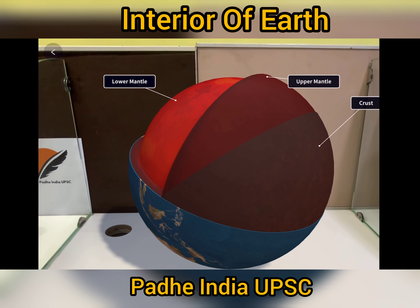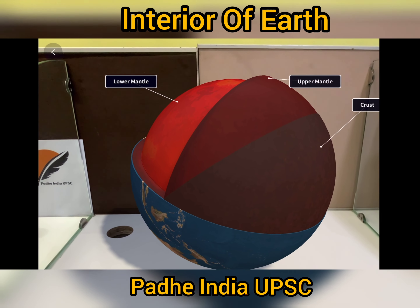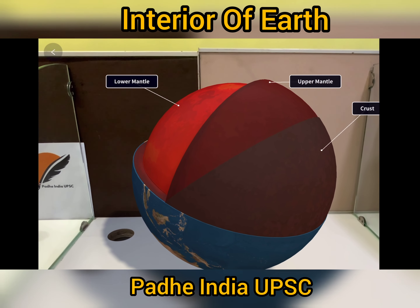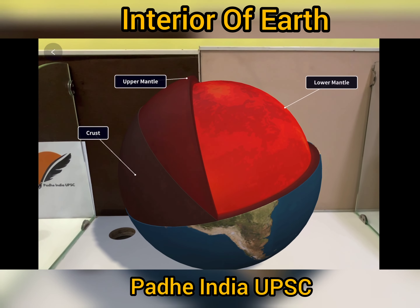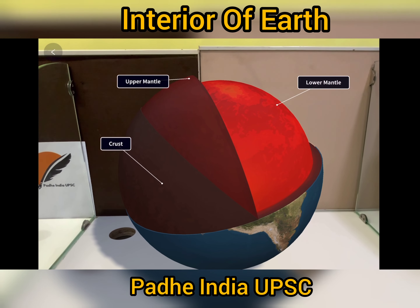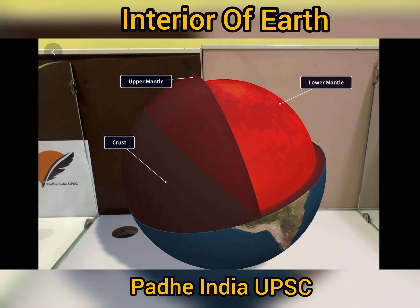As you can see, above the crust you can see an upper mantle, then you can see a lower mantle. The red portion is the lower mantle.